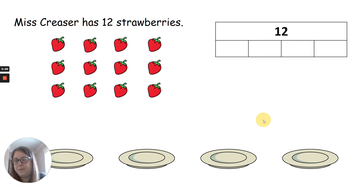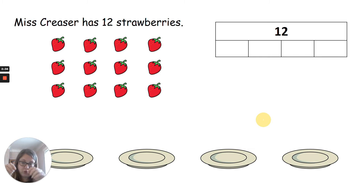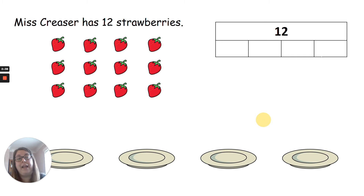This time I've got some strawberries. Miss Creaser has 12 strawberries and I'm going to share them between four plates. Have a little think — how can you share 12 between four, and how many is it going to be? You might want to draw four plates and then put your 12 strawberries, drawing them equally onto the plates. Then can you have a go at drawing the bar model? Pause the video and see if you can do it.